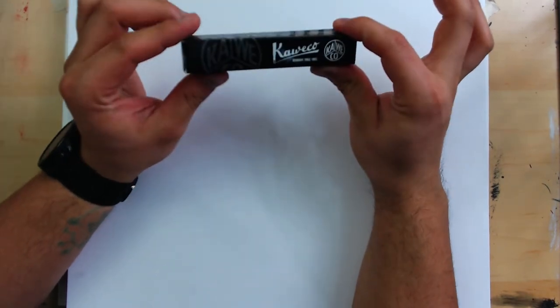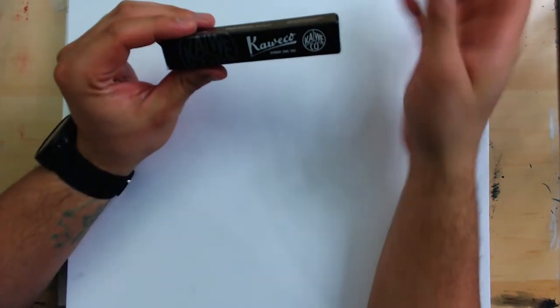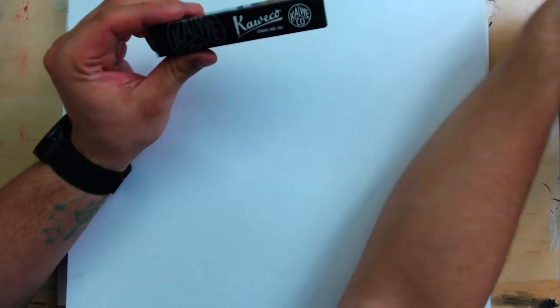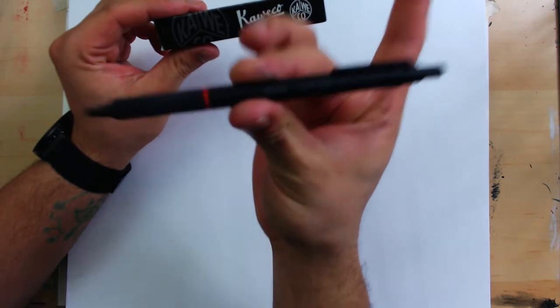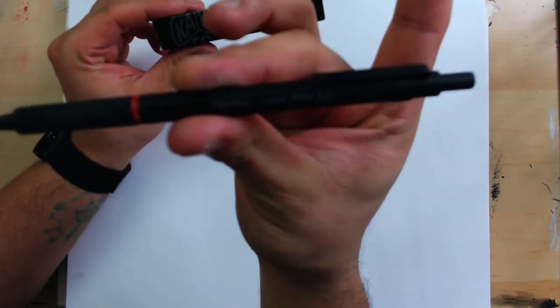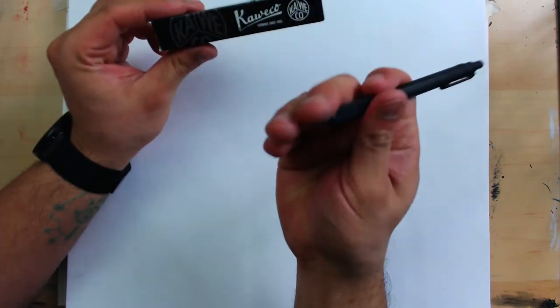So a lead holder typically comes in one of these kind of dealios. And here's like a little bit more of a fancy one. This is a Rotring lead holder. This thing is pretty hefty. It's got a metal barrel.